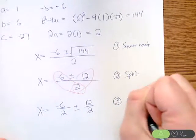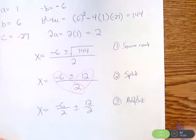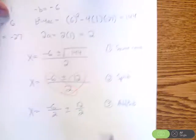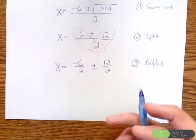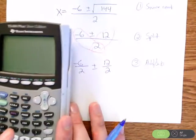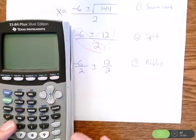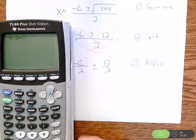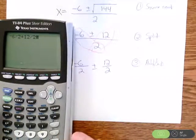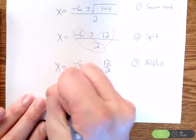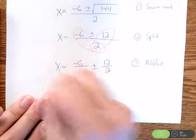And the third thing I'm going to do is I'm going to do the addition or subtraction here. Now you could simplify these fractions out before you add and subtract. Sometimes they will simplify, sometimes they won't. On this one, I'm going to let the calculator handle a lot of it. And I'm going to do negative 6 divided by 2, plus 12 divided by 2. So negative 6 divided by 2, plus 12 divided by 2, and I get x equals 3. That is one answer.